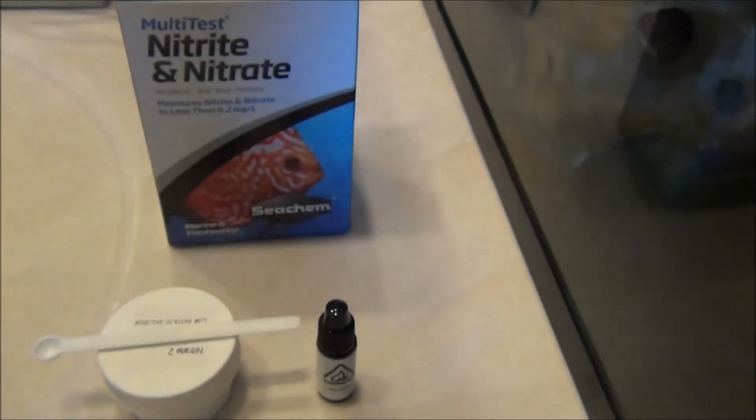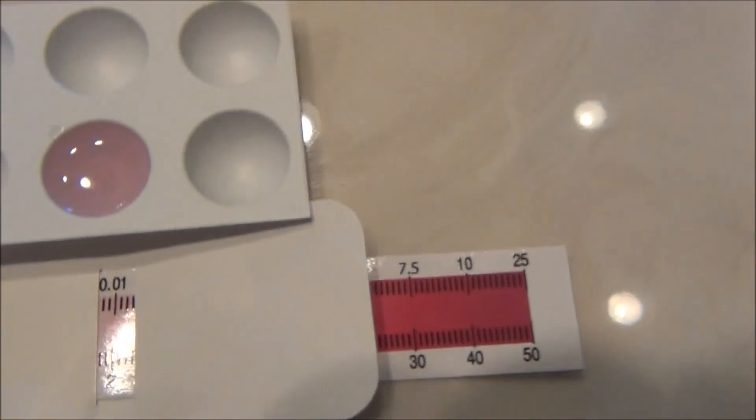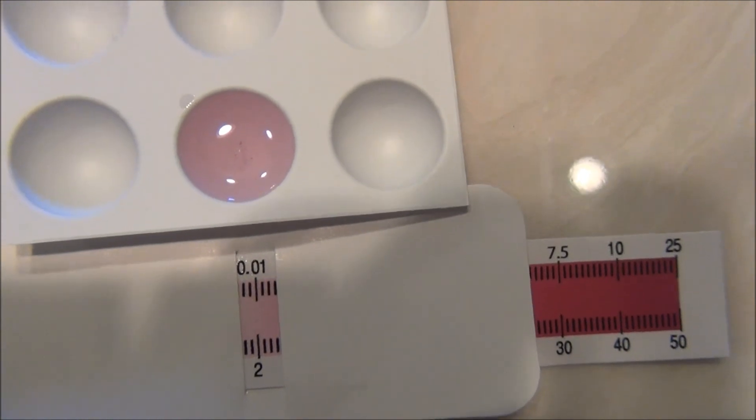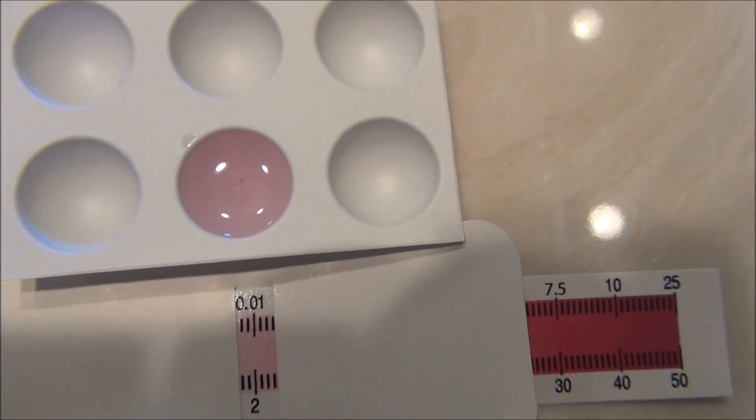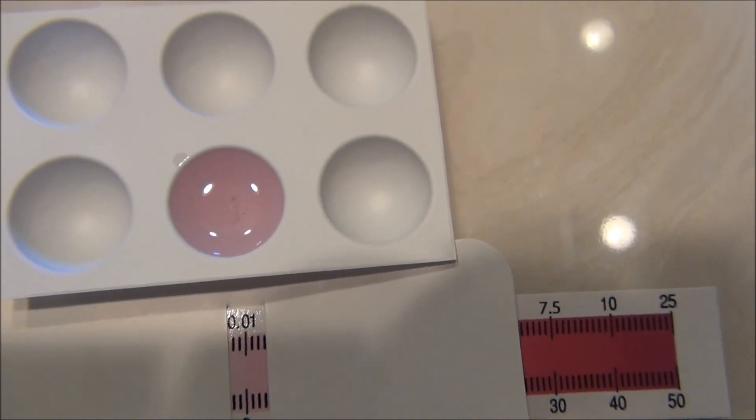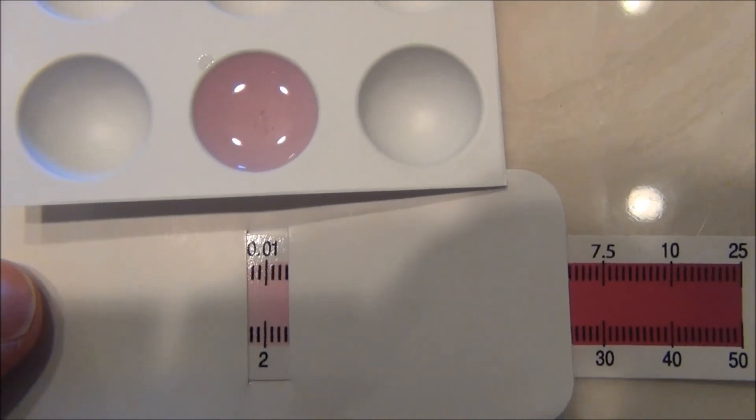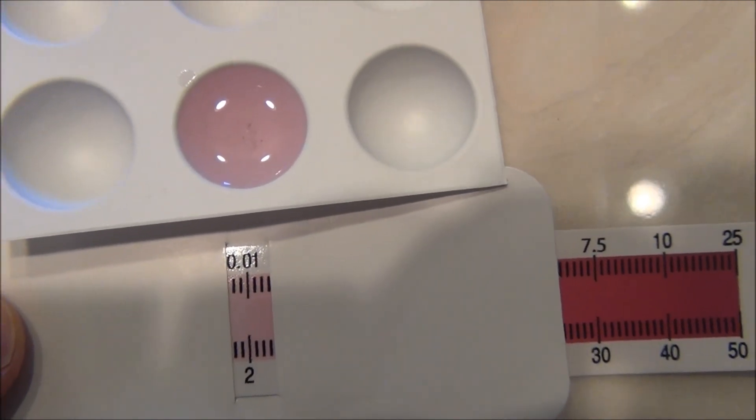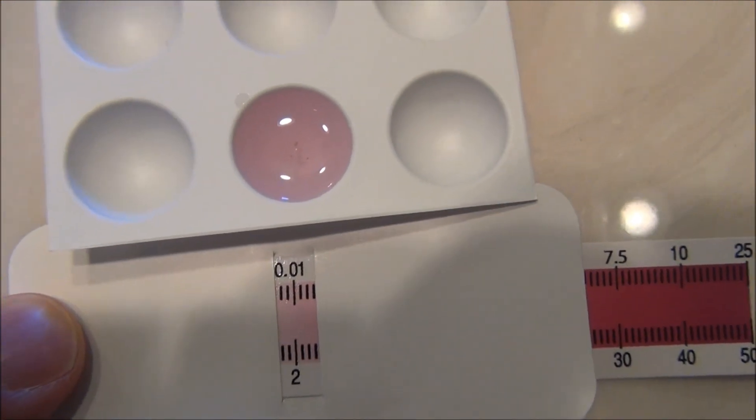This is using Seachem's multi-test nitrite and nitrate test kit. This is much more accurate than API's nitrate test because the API test kit will read from 0, 5, 10, 20, 40, and 80 parts per million. Seachem's test kit is much more accurate. This is a current reading of 2 milligrams per liter or parts per million.